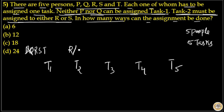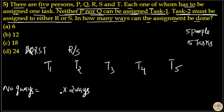Another condition is task 2 must be assigned to either R or S. So the number of ways task 2 can be completed is two ways — either by assigning to R or by assigning to S. If task 2 is assigned to R, that means R is no longer available, so task 1 can be completed by either S or T — that is 2 ways.